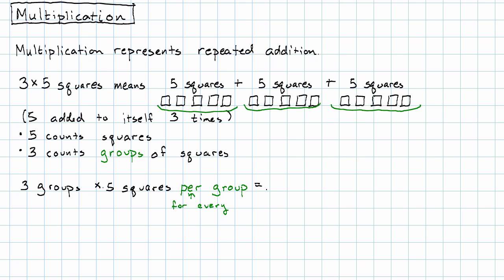If I have 3 groups, 5 squares per group, I have 15 squares. This is one way that the nouns work in multiplication.